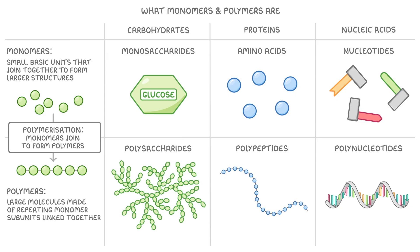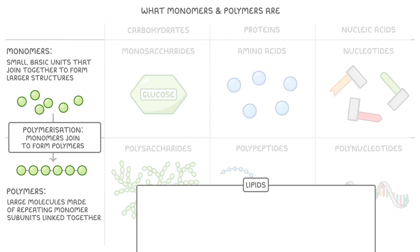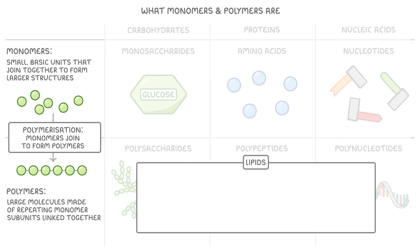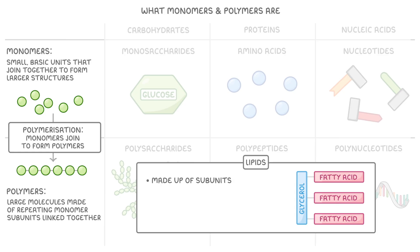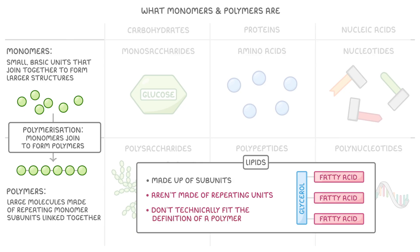You might be wondering at this point why we haven't mentioned lipids, and that's because while lipids are made up of subunits like glycerol and fatty acids, they're not made up of repeating units, and so they don't technically fit the definition of a polymer.